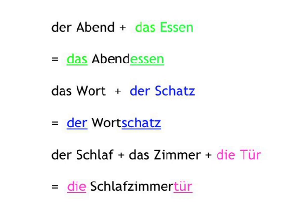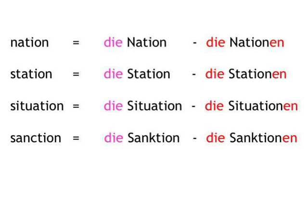But wait, there's more — we're going to throw a few hundred free words into the bargain. Nearly all English nouns ending in -ion are the same in German, just pronounced slightly differently. And what's more, the nouns are all feminine and form the plural by adding -en at the end. So we've got: Nation → die Nation → die Nationen. Station → die Station → die Stationen. Situation → die Situation → die Situationen. Sanction → die Sanktion → die Sanktionen.